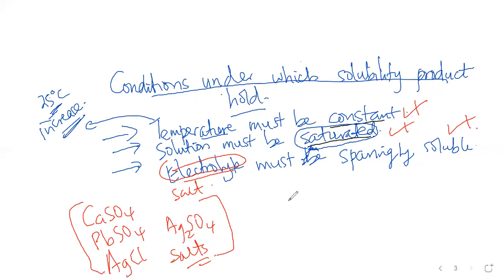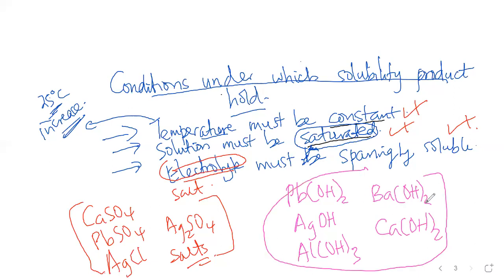However, there are cases where we may have compounds like lead hydroxide, silver hydroxide, aluminum hydroxide. All these ones, they are formed by precipitation. They are sparingly soluble. Barium hydroxide, calcium hydroxide, all these are sparingly soluble compounds. But we cannot call them salts. These are not salts. Actually, they are bases. So the most suitable word to use for hydroxides in this case is the term electrolytes.